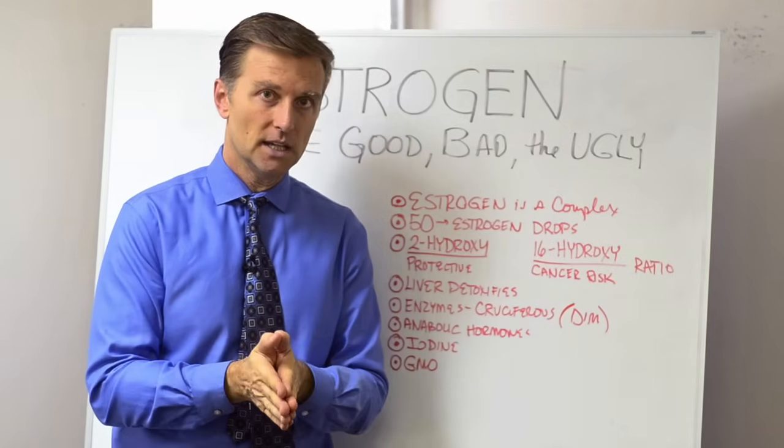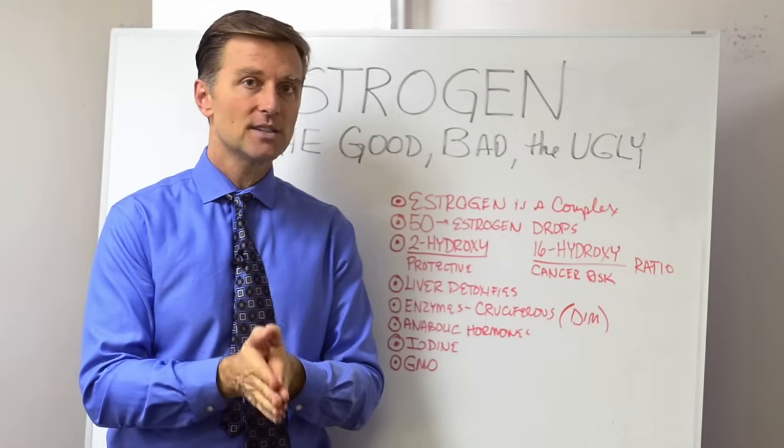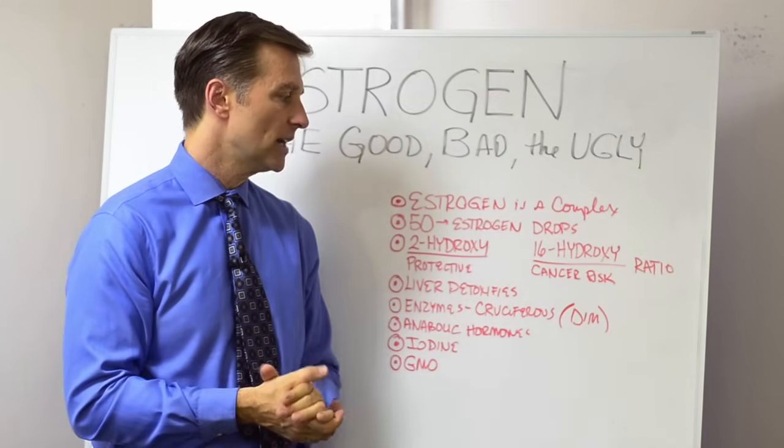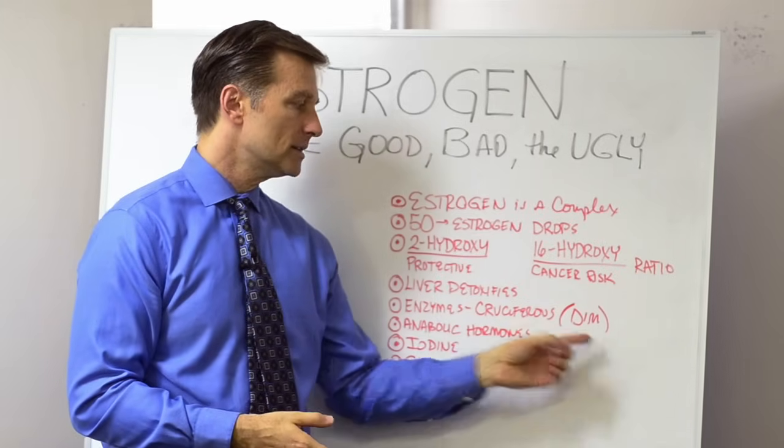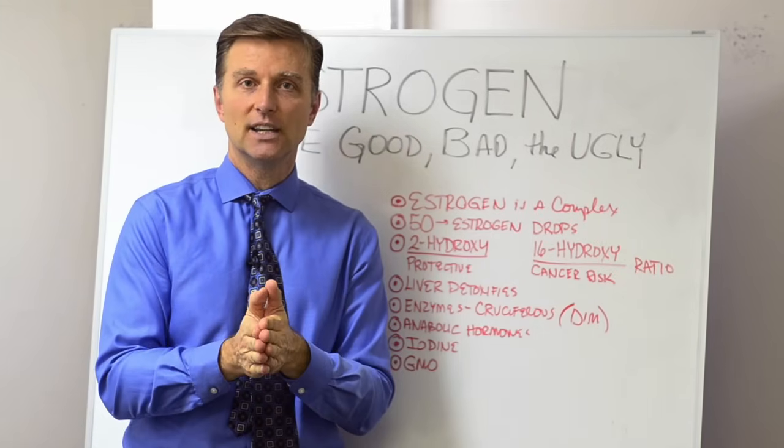In summary, if you're over 50, you want to actively and aggressively start to help balance the situation out by adding more cruciferous, add some sea kelp, or take some DIM as a supplement. I'll see you in the next video.